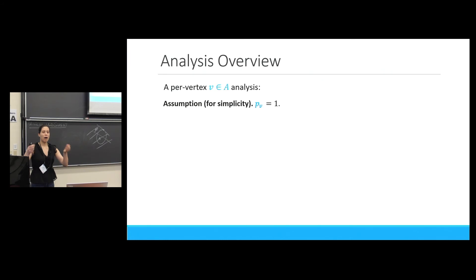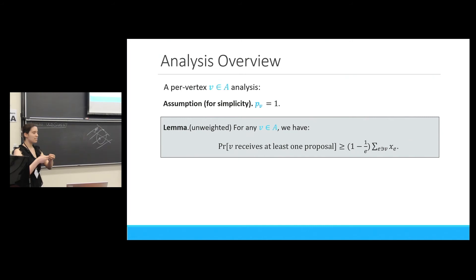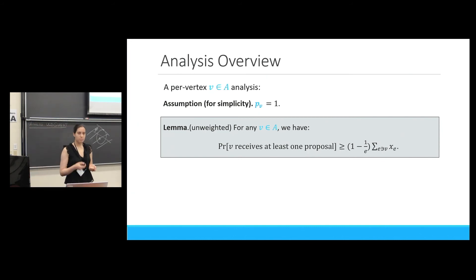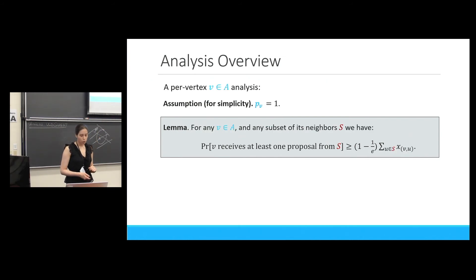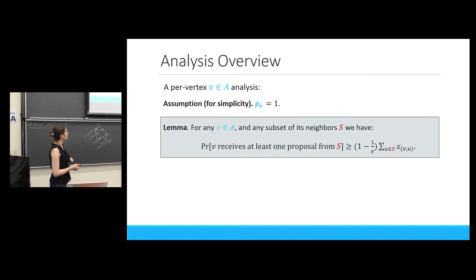Our analysis is per online vertex — we bound the rounding loss per any online vertex. For simplicity, assume vertex v has p_v equal to 1, meaning it always arrives, since these terms cancel in our analysis. For an unweighted graph, it would suffice to show that this vertex receives a proposal with probability at least 1 minus 1 over e times the probability that it receives a proposal in the optimal LP solution. But working with a weighted graph, because we pick the best proposal, it is enough to prove this lemma: for any subset of its neighbors, this vertex receives at least one proposal from that set with probability 1 minus 1 over e times the probability that it receives a proposal from that set in the LP solution.